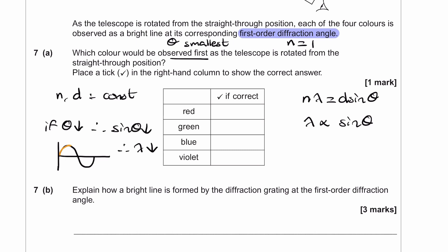So the color observed first — when θ is the smallest — would be the one with the shortest wavelength, and that would be violet light.